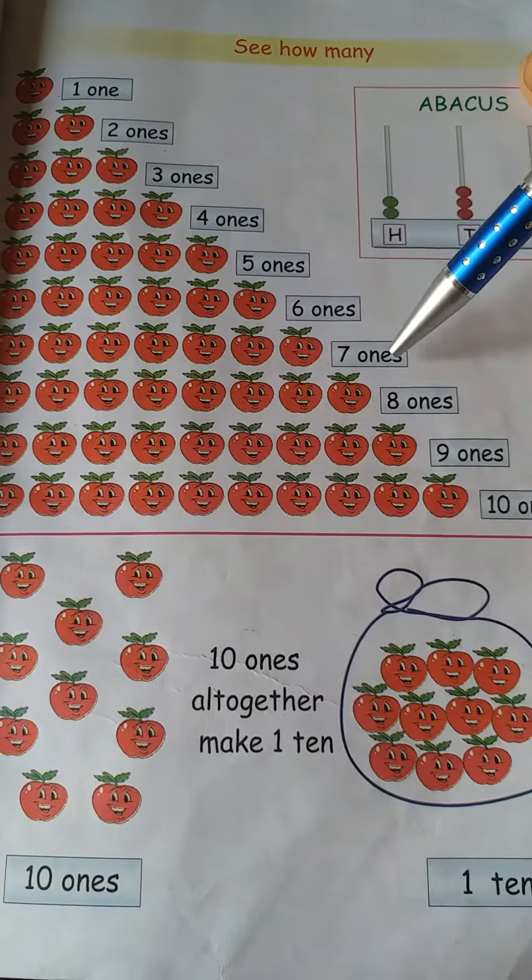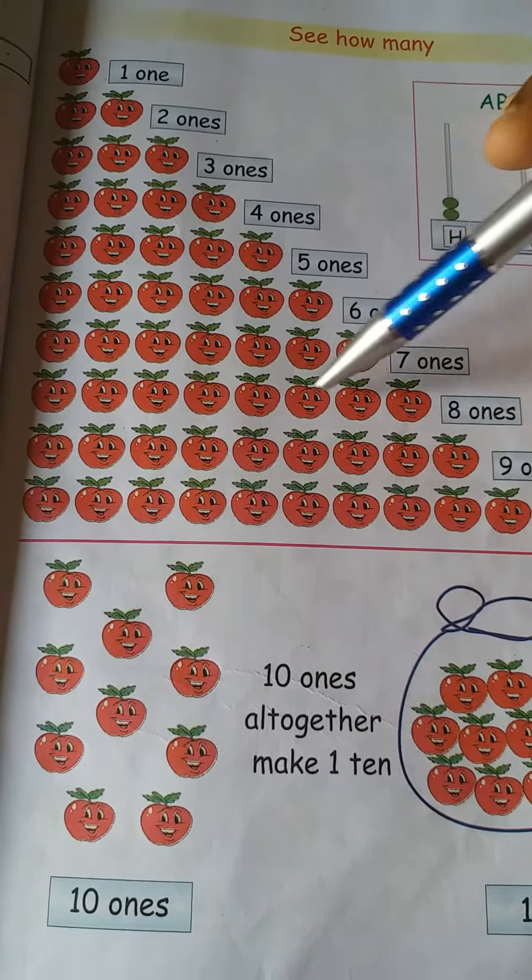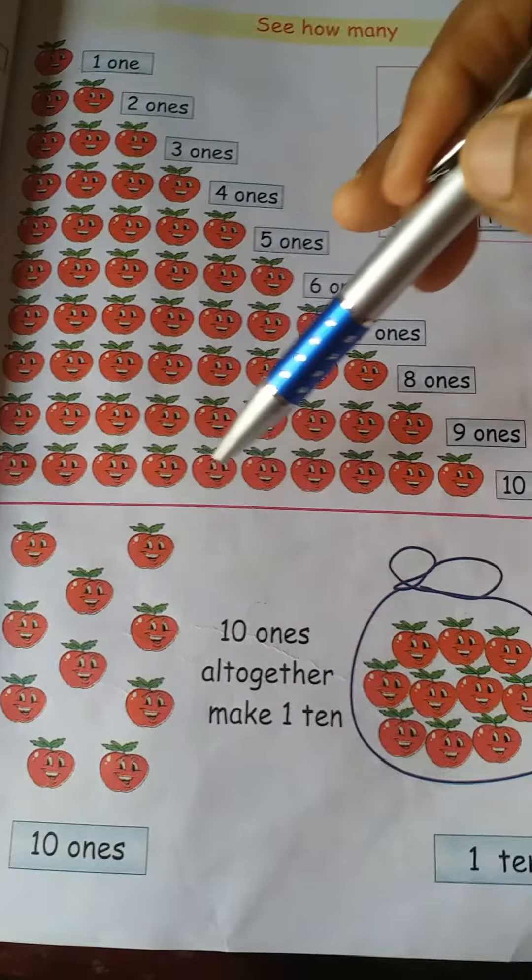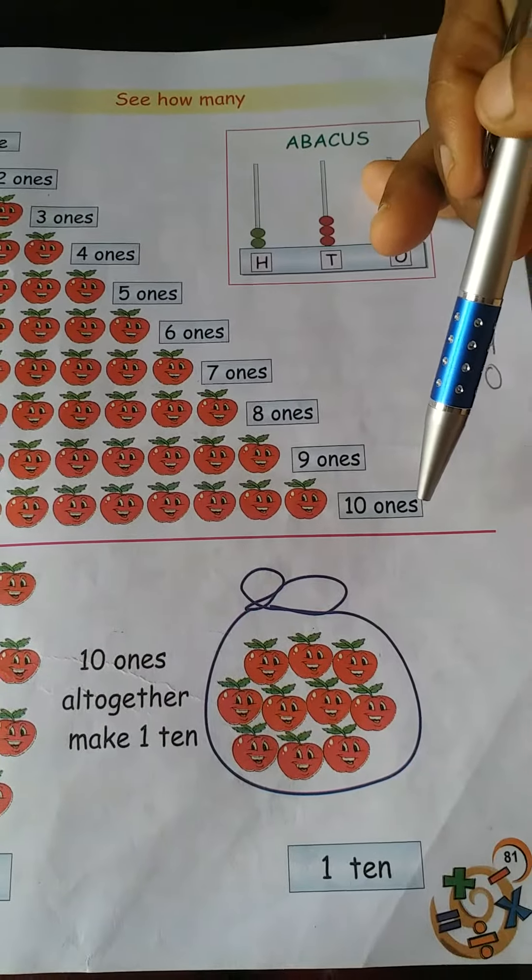Seven apples are there, seven ones. Eight apples are there, eight ones. Nine apples are there, nine ones. Ten apples are there, ten ones.